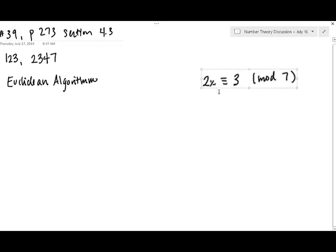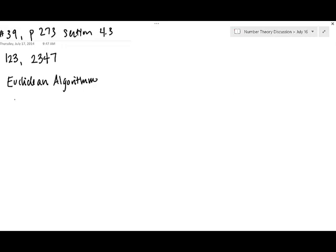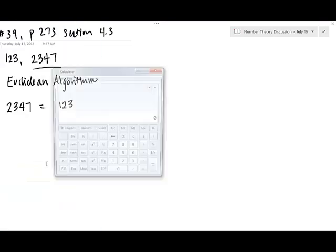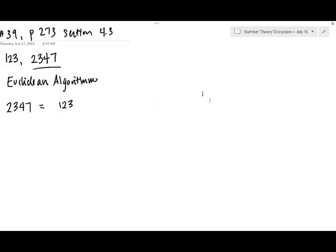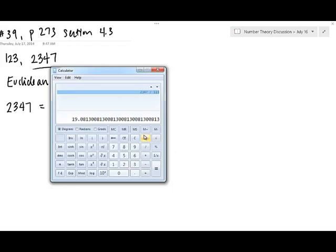I'm going to start with my larger input, 2347, and divide it by 123. Let me get my calculator here. So if I take 2347 and divide it by 123, it goes in there 19 times. And our remainder is going to be, so 2347 minus, careful on the order of operations, it's important to put those parentheses in there. So I get a remainder of 10.